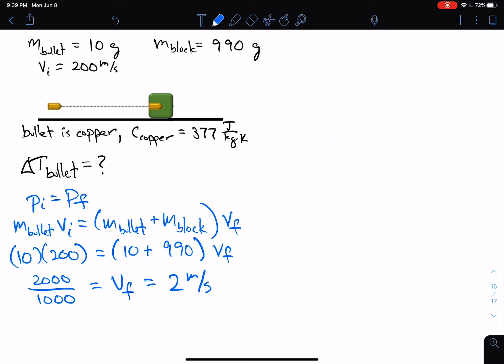Now we can move on to energy analysis. We can use conservation of energy: ΔPE + ΔKE + ΔTE = 0. In this situation, there's no change in potential energy. Other situations, that might not be the case, but in this situation, there's no change in the potential energy, so this is 0.